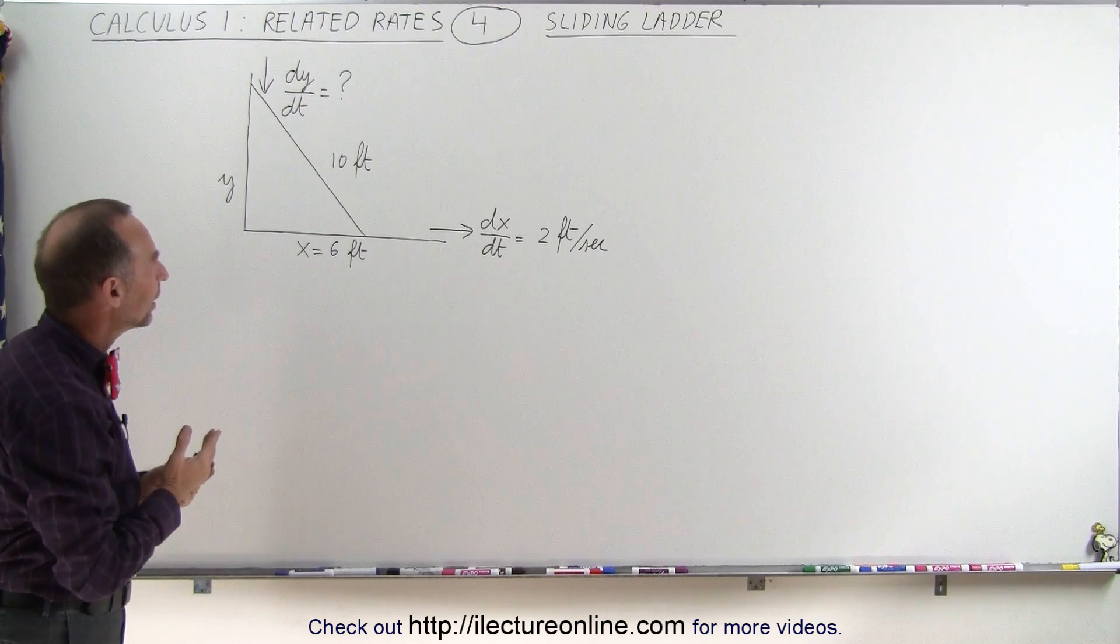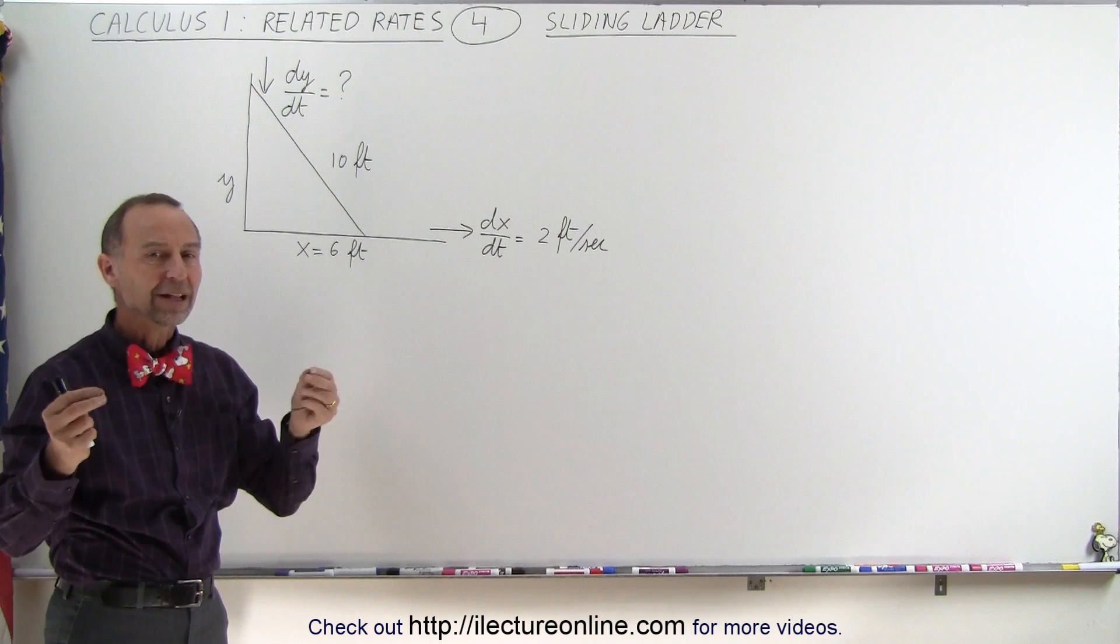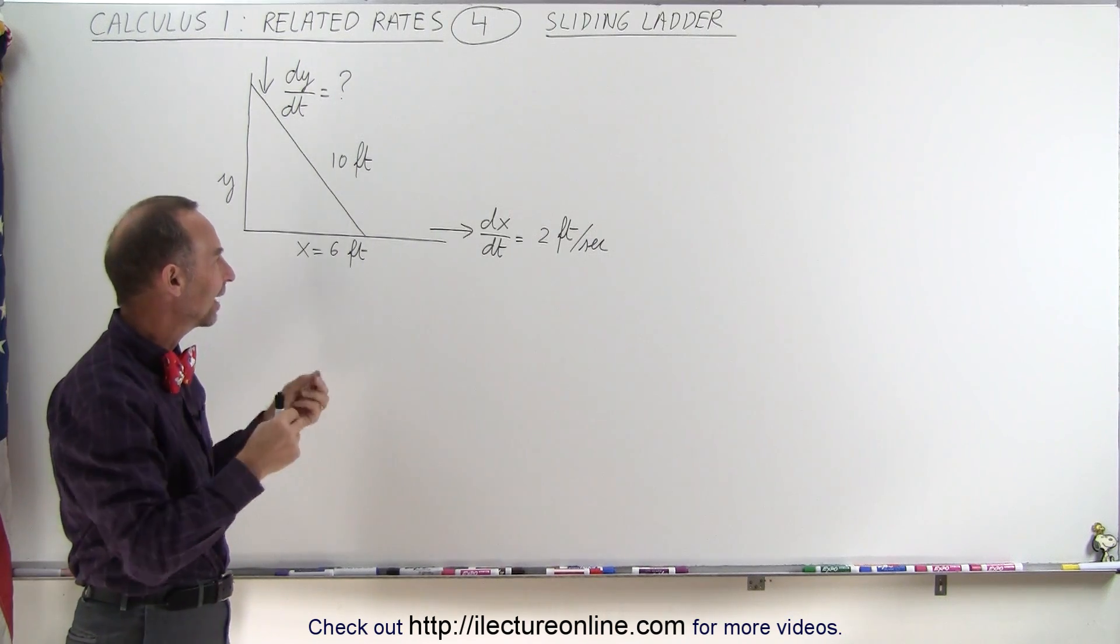How do we do that? Well, we're trying to find dy/dt and we're given dx/dt. So we need to find some relationship between x and y.